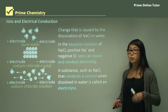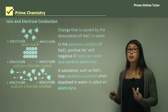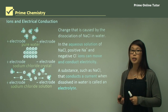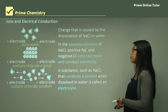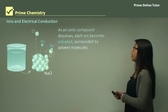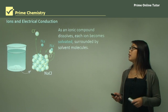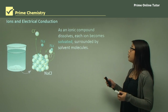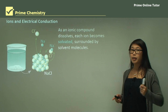A substance such as sodium chloride that conducts a current when dissolved in water is called an electrolyte. Other substances with the same property — where dissolving in water allows current to flow — are also called electrolytes.